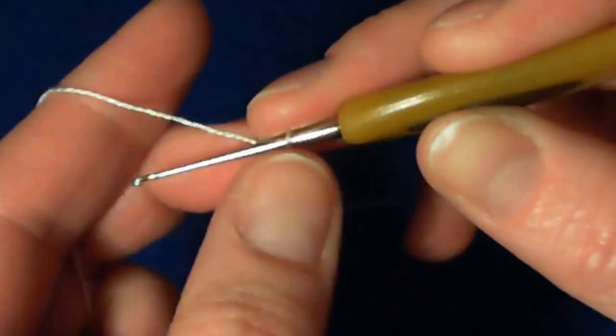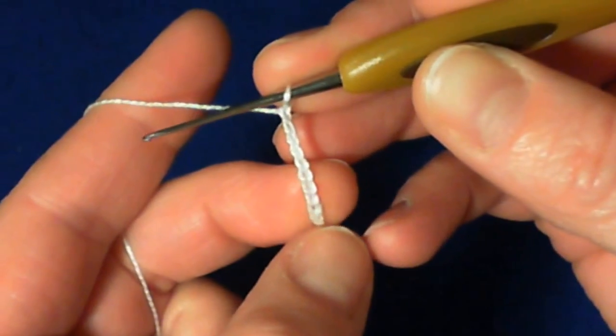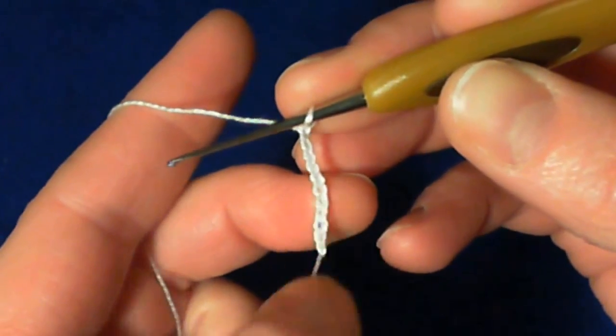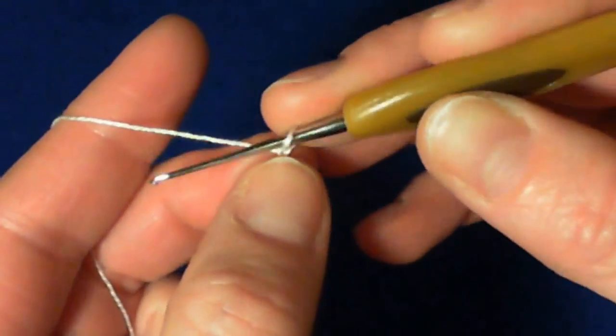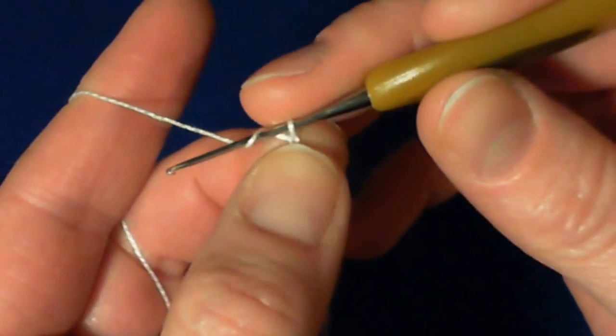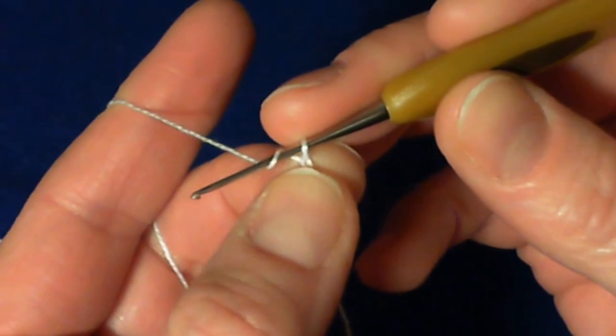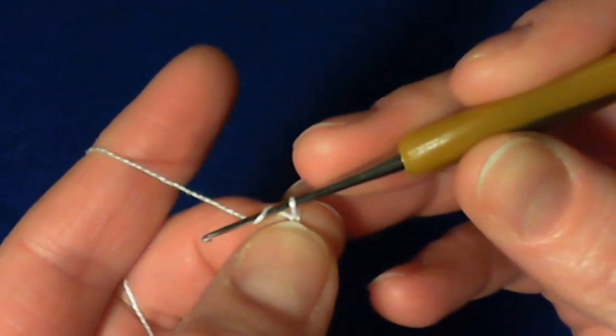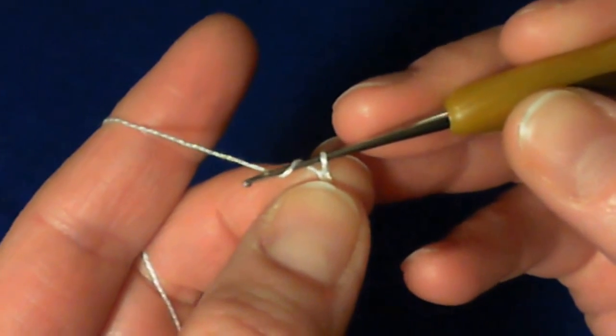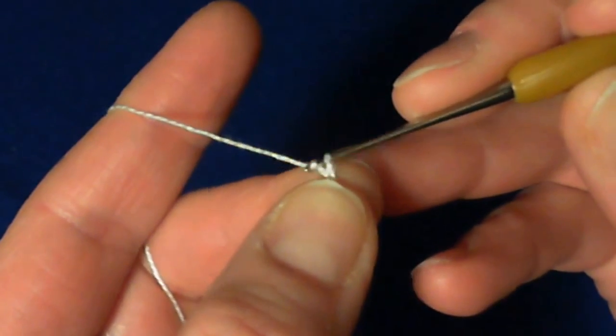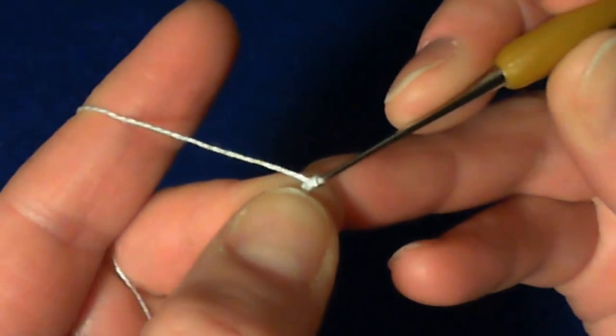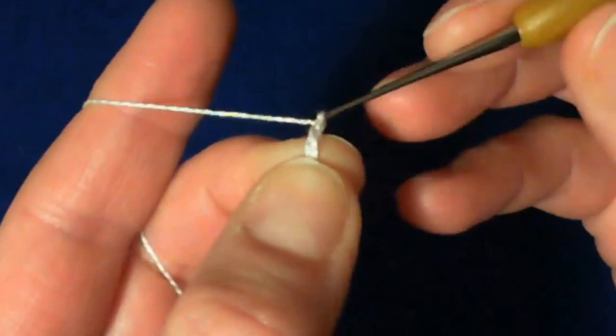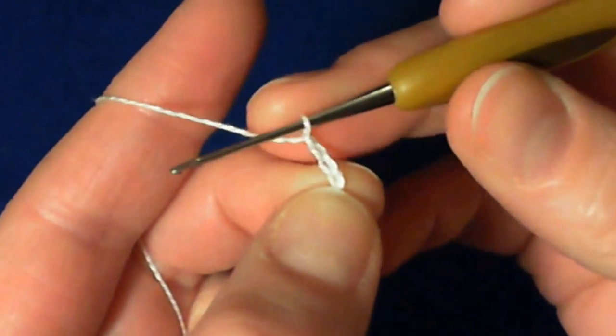To make a clones knot, make a small chain for the beginning of 10 stitches, chain 10. And then we will chain a small chain for the clones stitch, or it is also known as clones knot. So crochet 4 stitches: 1, 2, 3, 4.